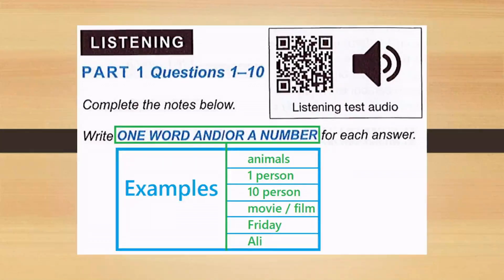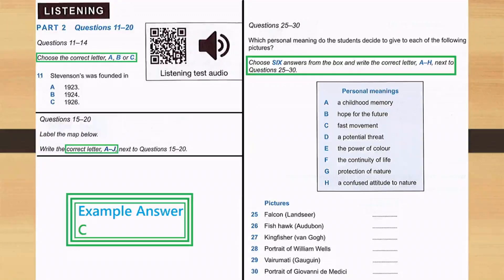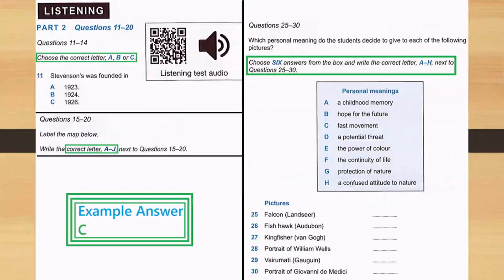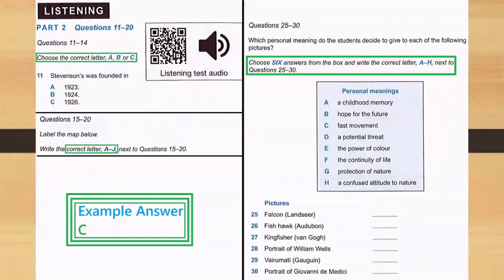Just keep in mind: if you are writing a day or a game, the first letter should be capital. Listening part two will have questions like: choose the correct letter A, B, or C; or for questions 15 to 20, write the correct letter A to J. In a third case, you choose six answers from the box and write the correct letter from A to H. For all of these question types, the example answer is C.